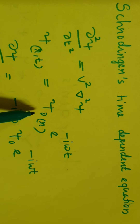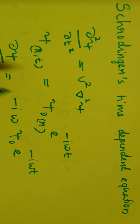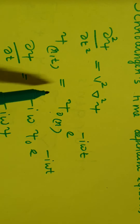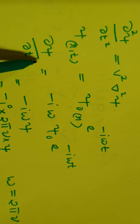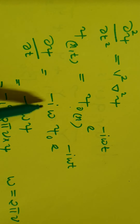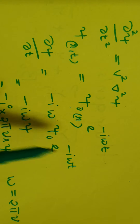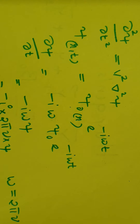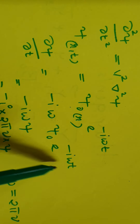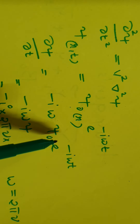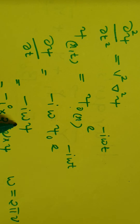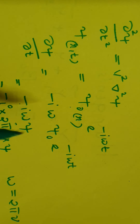ψ₀ is called the complex amplitude. Differentiating ψ with respect to t gives ∂ψ/∂t = −iω ψ₀ e^(−iωt). Since ψ₀ e^(−iωt) equals ψ, this becomes ∂ψ/∂t = −iωψ.